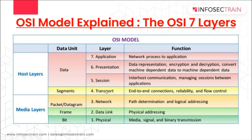The lower four layers are known as lower layers; they provide primitive network-specific functions like routing, addressing, and flow controls. We are going to discuss each layer in detail and understand how data flows in the OSI model from top to bottom and from bottom to top. But before we proceed, let's make sure we all know these terms: data, segments, packets, datagrams, frames, and bits.